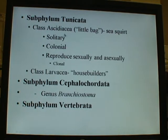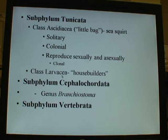Within the tunicates, you have two groups: the sea squirts and the house builders, or more formally, class Ascidiacea and class Larvaceae. Within the tunicates, you also have solitary forms or colonial forms, and I'll show you pictures and go over the biology of each one.